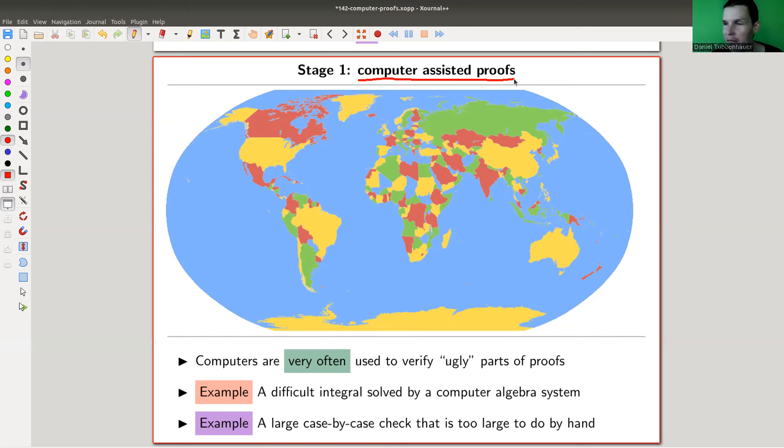Of course, there could still be mistakes, but any proof has some mistakes somewhere. So the first stage, historically, is that computers were used to do the ugly parts of proofs. You have a horrible integral that you need to solve, you ask a computer to do it. You have a huge case-by-case check, you ask a computer to do it. Computer algebra systems do exact calculations, so you can really use that in your proof. I did that myself in the past. There was an ugly integral that I didn't want to compute. I just fed it into a computer algebra system and it gave me an exact answer.